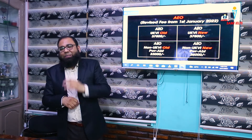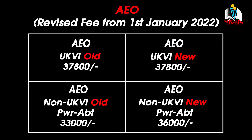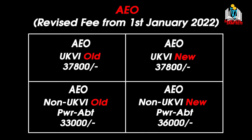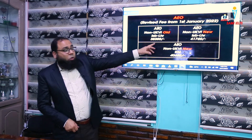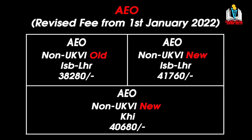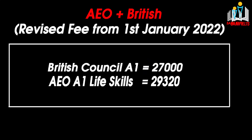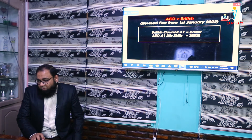AEO also conducts IELTS since 1997 and revised fees from 1st January 2022. AEO's UKVI fee remained unchanged at 37,800. However, non-UKVI had a jump of 3,000 — from 33,000 to 36,000. AEO non-UKVI for Islamabad and Lahore is now 41,760, and for Karachi it is 46,080. The Life Skills fee is 29,320, charged the same by both British Council and AEO.